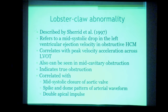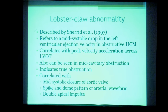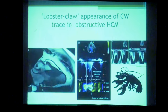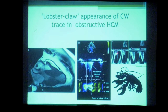The 'lobster claw' abnormality refers to a mid-systolic drop in LV ejection velocity observed on Doppler, indicating true obstructive cardiomyopathy. It can occur with LVOT obstruction or mid-cavitary obstruction and correlates with mid-systolic closure of the aortic valve. The appearance resembles the claw of a lobster — there is a drop in velocity during the mid portion of systole due to true obstruction occurring within the LV.